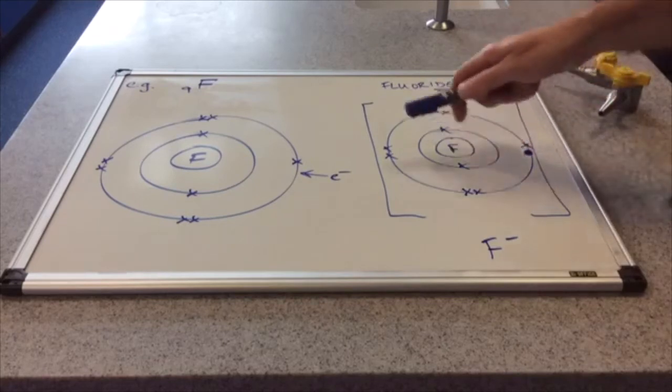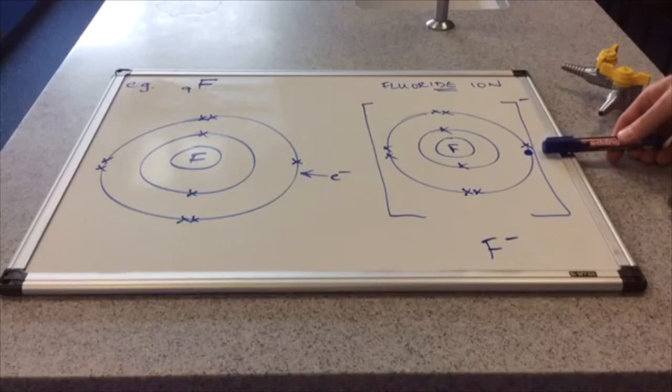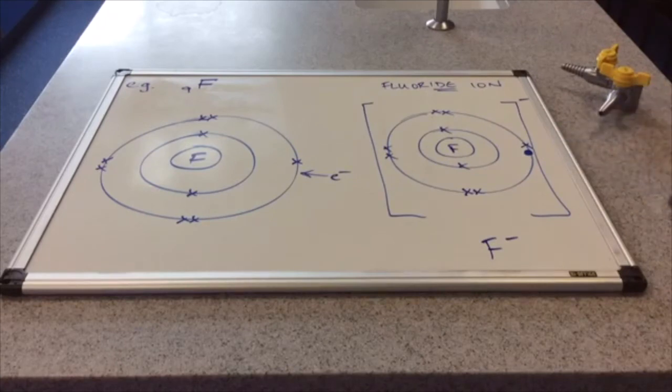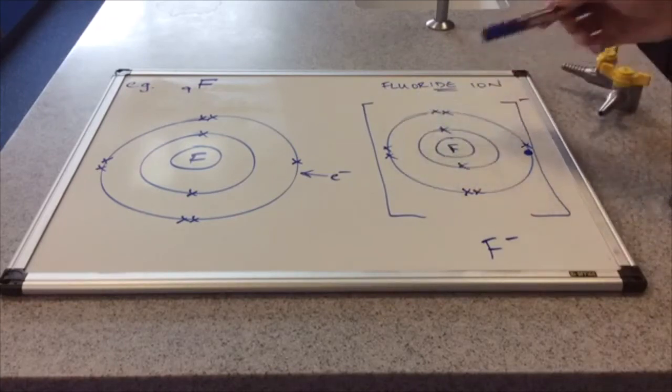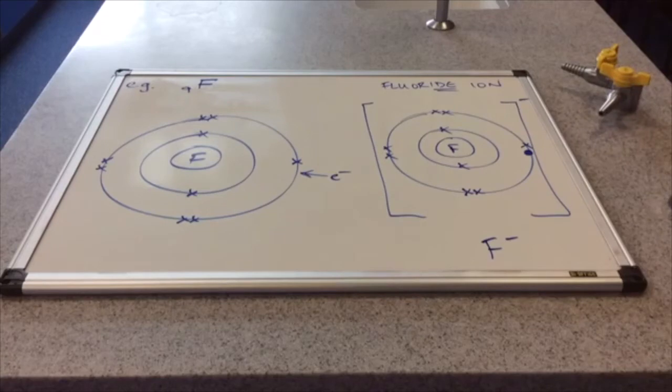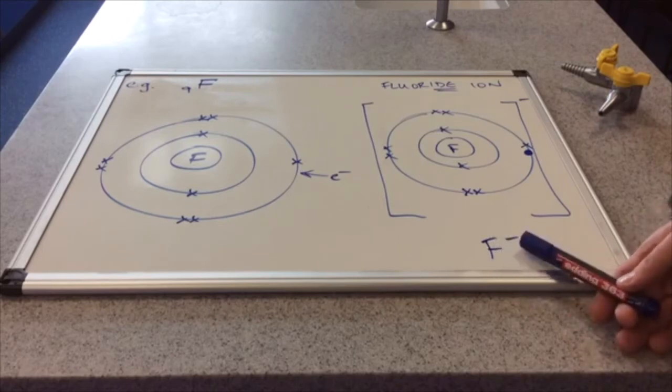So here's the dot and cross diagram. You see why it's called dot and cross now? Because of this. This is the new electron that's come in. This one here. You've got to show on your diagram that that's come from something else. So the original electrons are the crosses. And we're using the dot to represent the new electron from somewhere else. The overall charge on the fluoride ion is 1 minus because it's gained one extra electron.